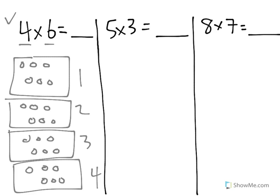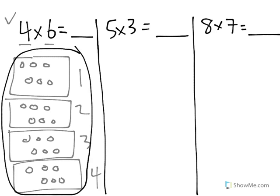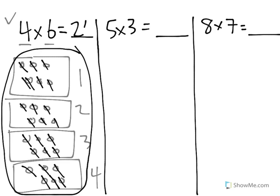And we want to know when we multiply how many circles there are total in all of these four groups. Well if we count we could see there are 1, 2, 3, 4, 5, 6, 7, 8, 9, 10, 11, 12, 13, 14, 15, 16, 17, 18, 19, 20, 21, 22, 23, 24. 24 is the correct answer to 4 times 6.